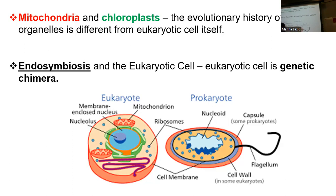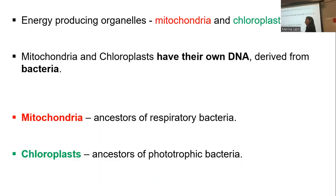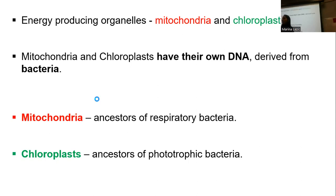There are reasons why we think that, and we talked about four of them in the beginning. Today we will expand on how we know that eukaryotic cells developed as a genetic chimera after the host ingested mitochondria and chloroplasts. Mitochondria and chloroplasts are energy-producing organelles. The host was likely a hydrogenotrophic organism. There are different theories — hypothesis 1 and 2 — but we definitely know that mitochondria and chloroplasts are bacteria that were ingested.